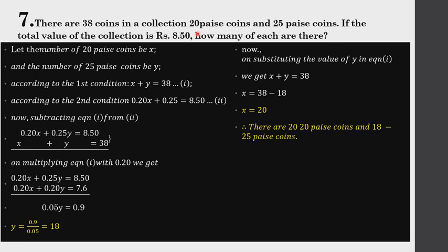So the total value of x coins at 20 paise is 0.20x rupees, and y coins at 25 paise is 0.25y rupees. Since the total value is rupees 8.50, our two equations are: x plus y equals 38, and 0.20x plus 0.25y equals 8.50. We now solve these simultaneously.